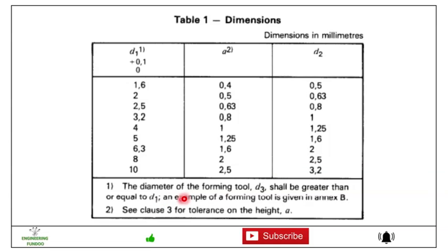The diameter of the forming tool d3 shall be greater than or equal to d1. An example of forming tool is given in Annex B. If you want to see the tolerances on the height A, you can refer to Clause 3 of the standard.